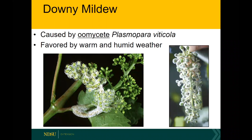That's it for powdery mildew. Downy mildew is the coolest-looking pathogen there is in plant pathology — it's kind of beautiful, although obviously it's not something you want to see if you're trying to get a good grape harvest. It's caused by an oomycete, which is a fungal-like organism with some biochemical differences important for management. Its scientific name is Plasmopara viticola, and it's favored by warm and humid weather.